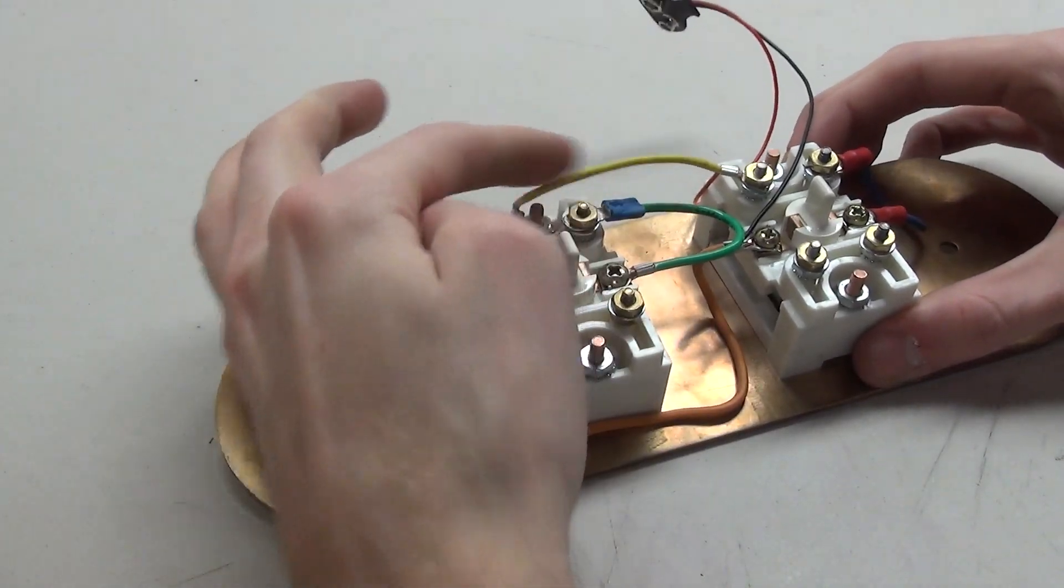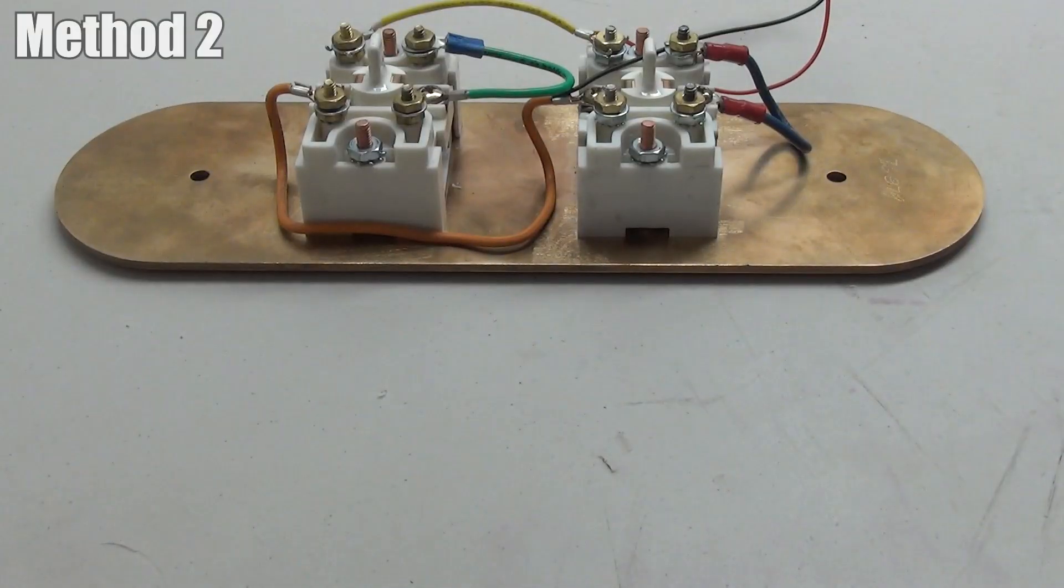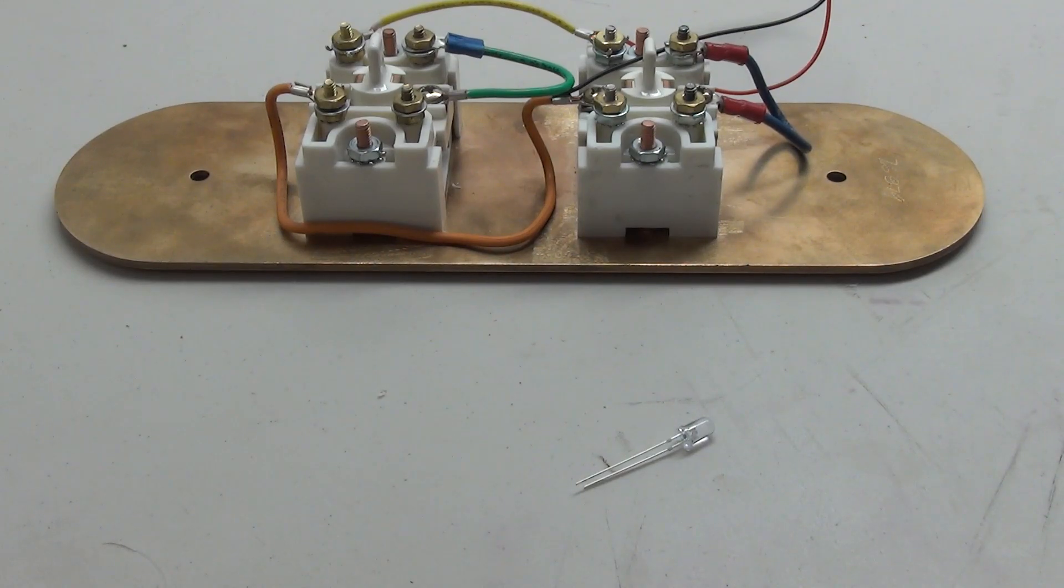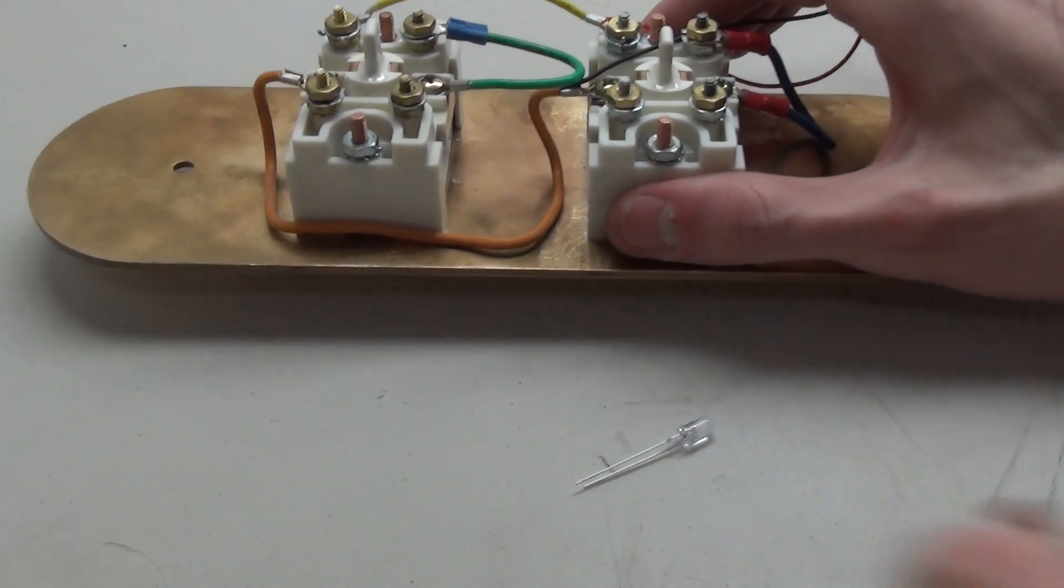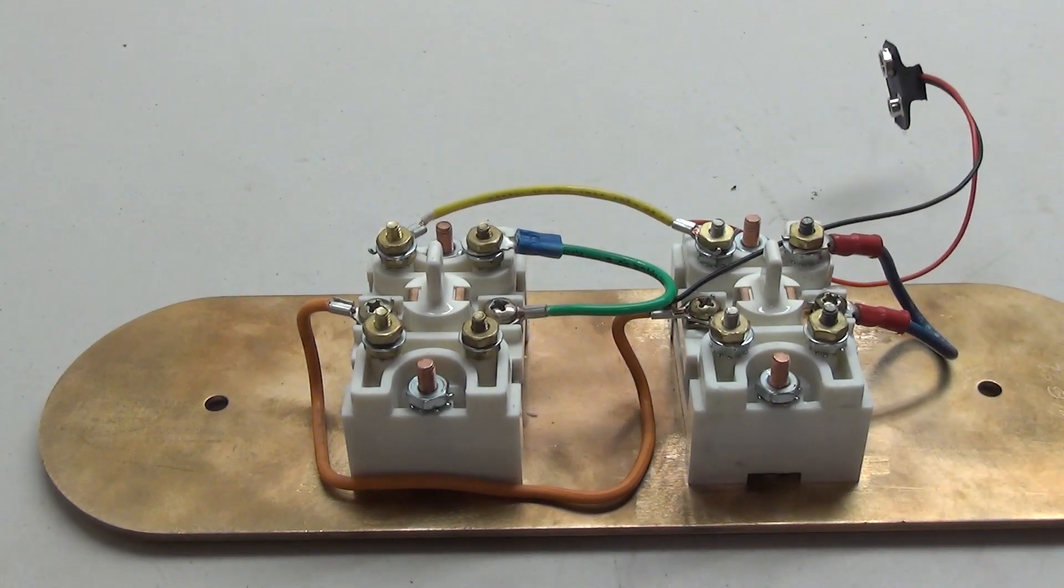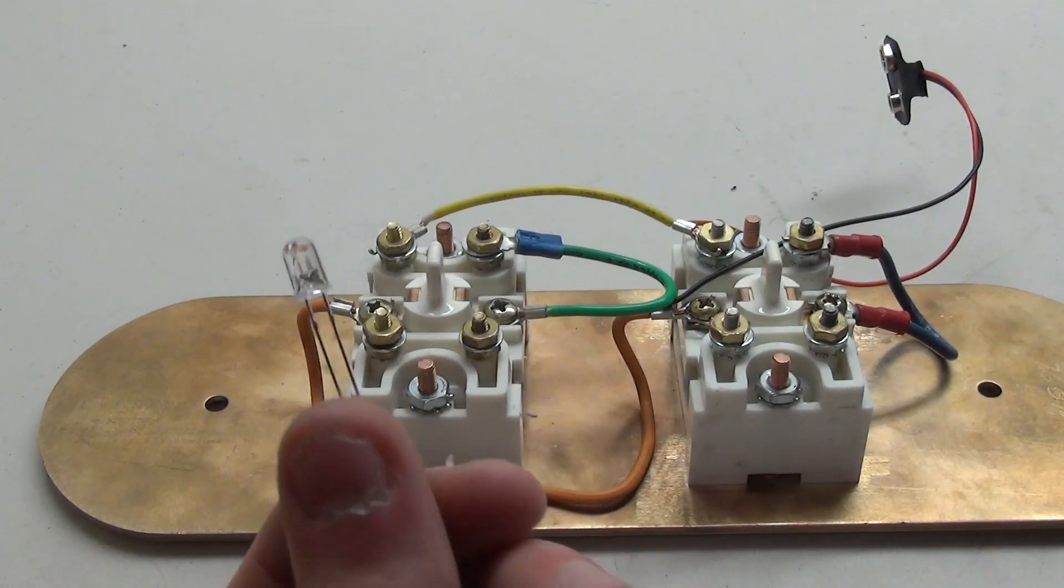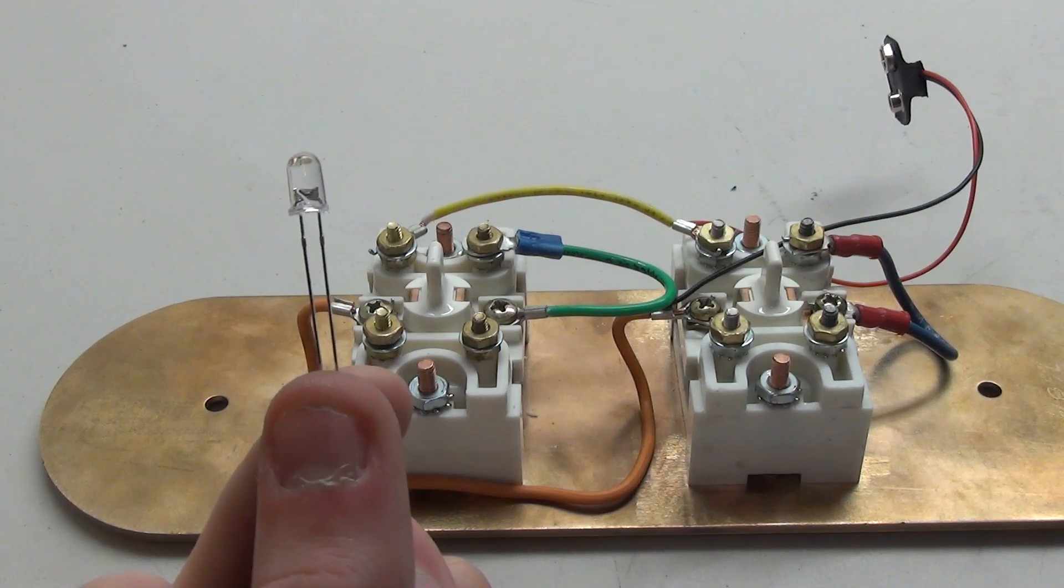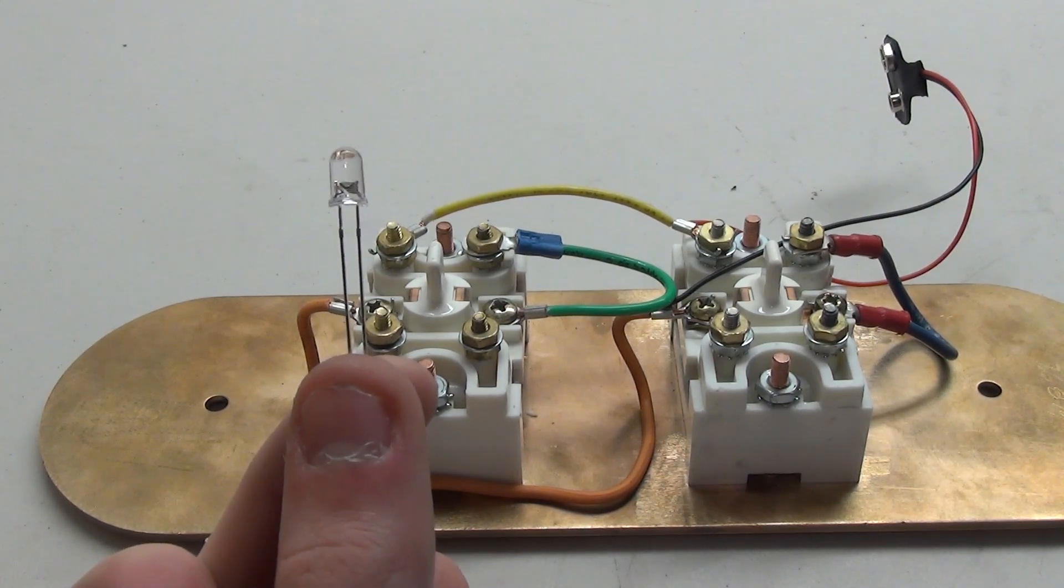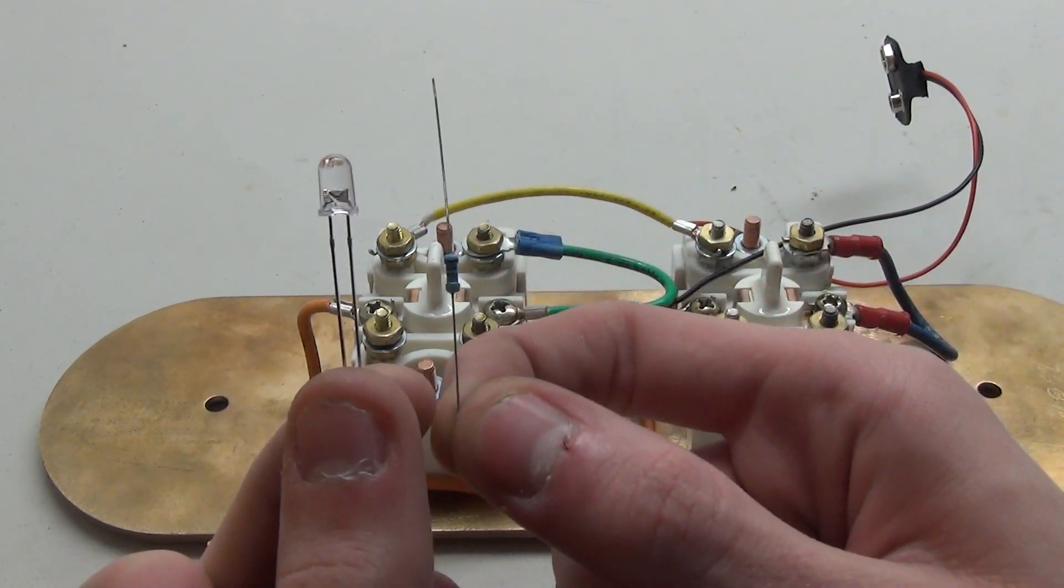Method two will follow the exact same type of wiring as method one, however instead of using the incandescent PSB bulbs, we're just going to be using a very standard LED. However, in order to use the LED, you will also need to add a resistor into the circuit to limit the current that flows to the LED because you don't want to burn it out.